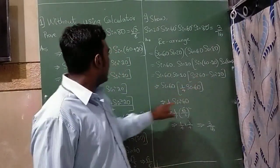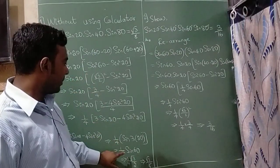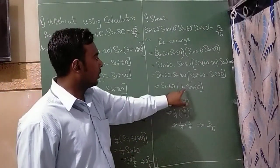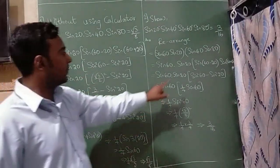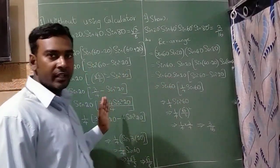Now this directly I have taken from here, 1 by 4 sin 60, you need to solve all these steps, I have skipped all these steps because I have already solved here.